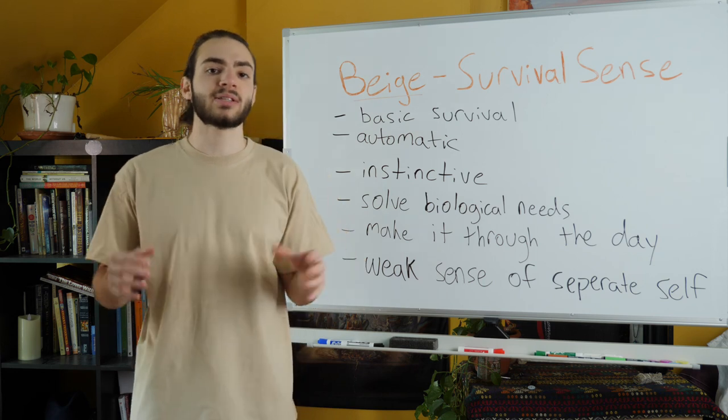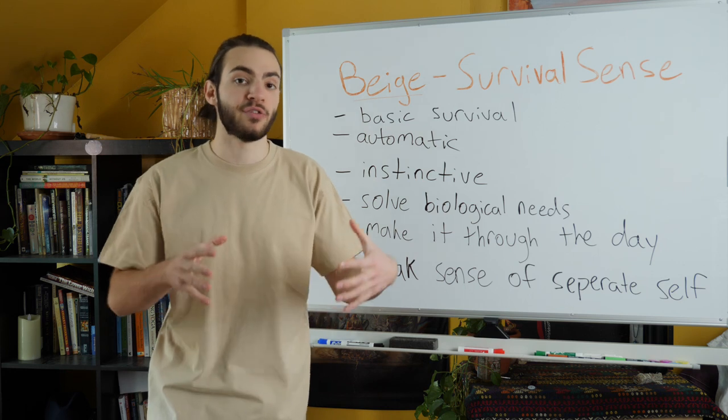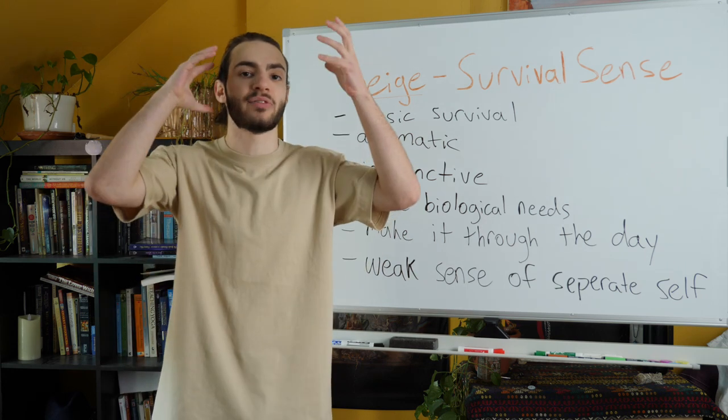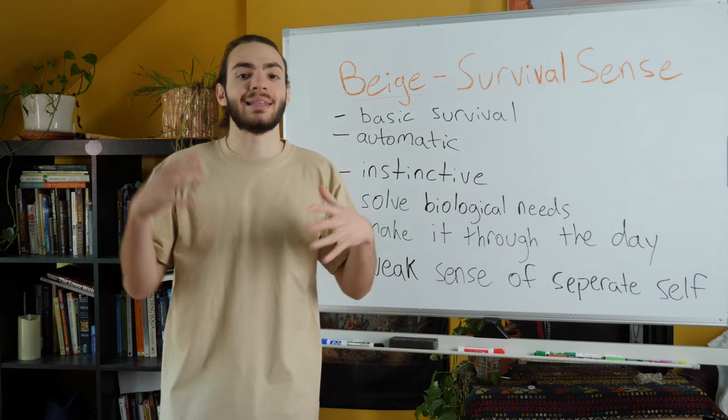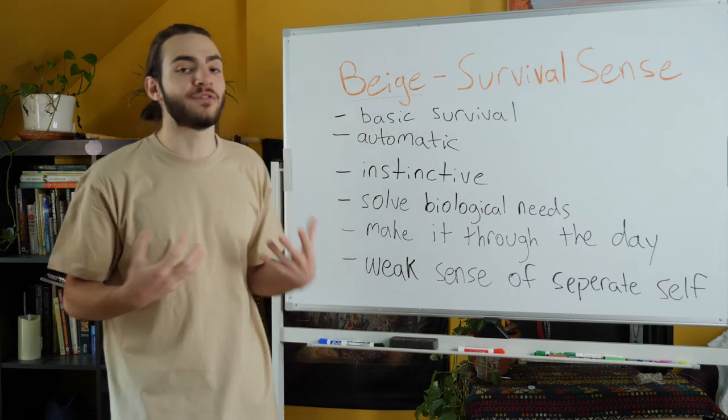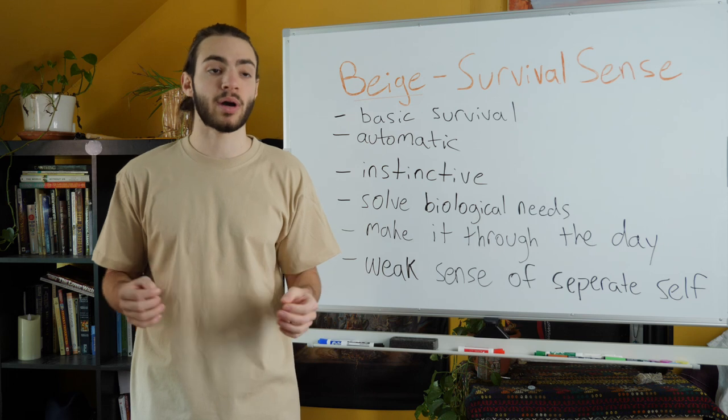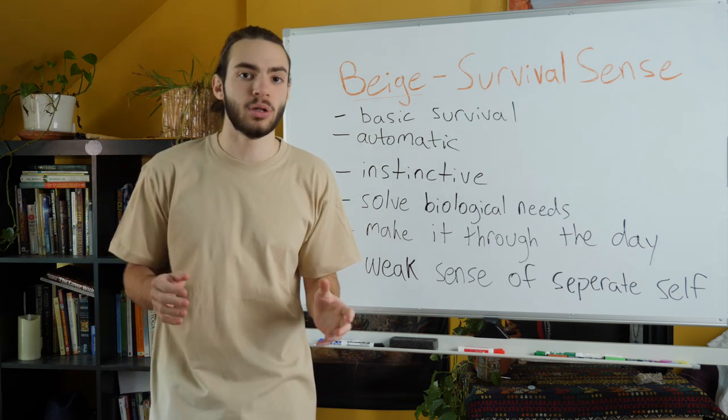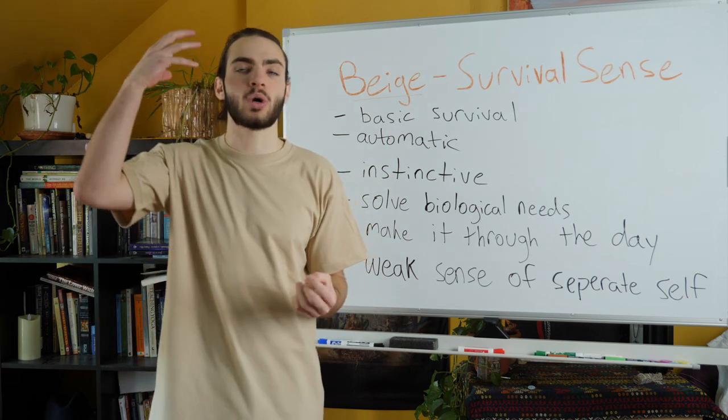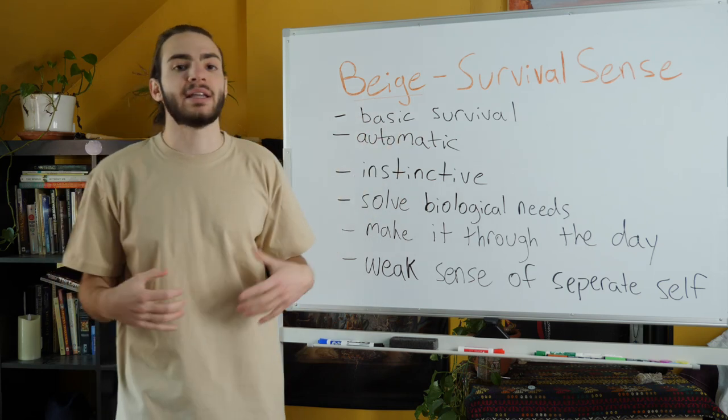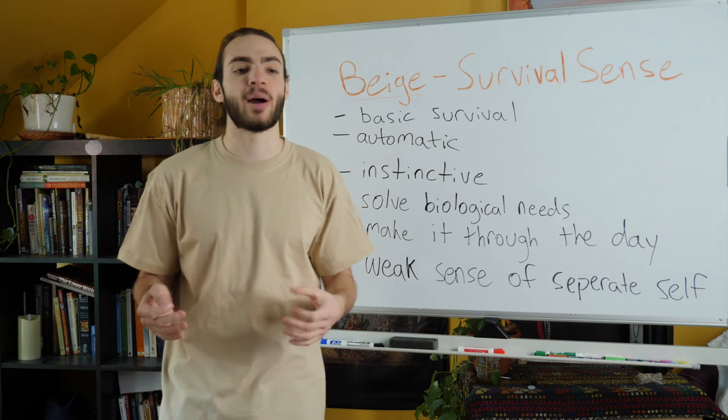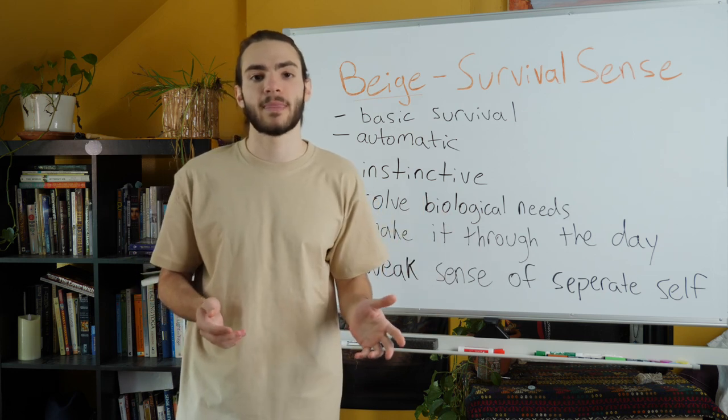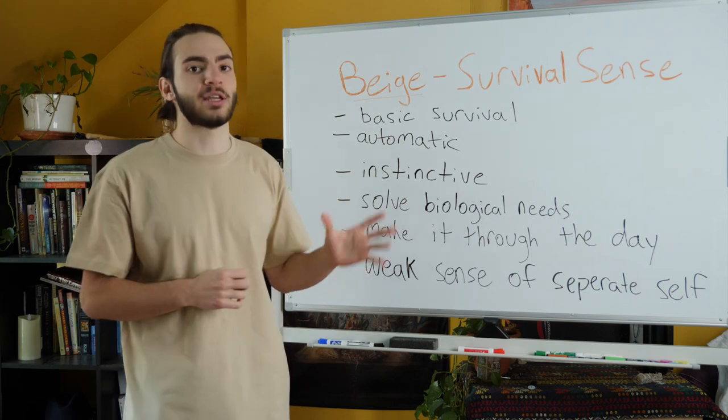All right. So stage beige is basically basic biological survival. It is a pre-verbal stage. So someone who exists in stage beige does not really have access to any type of higher mind thinking, conceptualizing language. It is very basic and stage beige functions by their senses. All right. So stage beige relies heavily on the senses and is very animalistic. So kind of like an animal, their survival is automatic. So there is no conscious decision making that's going on in stage beige. It's very automatic. So I feel hungry. Therefore, I'm going to go find food or I feel thirsty. So I'm going to go find water or I have to pee. So I'm going to go pee wherever is most convenient. All right. So there's no social skills in stage beige. It's almost like an animal.